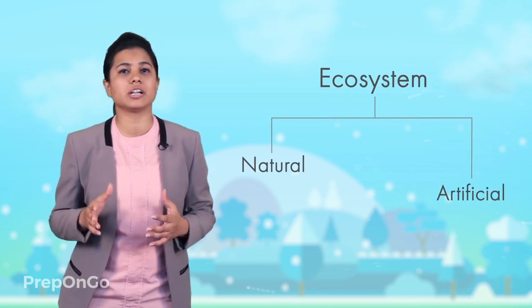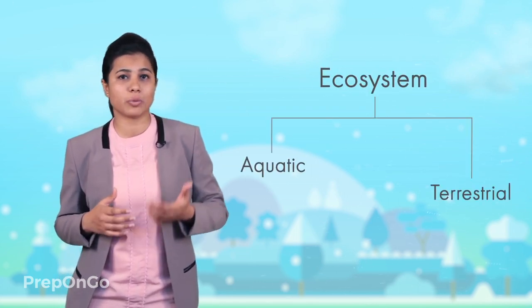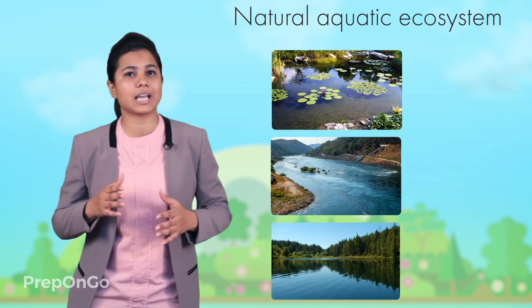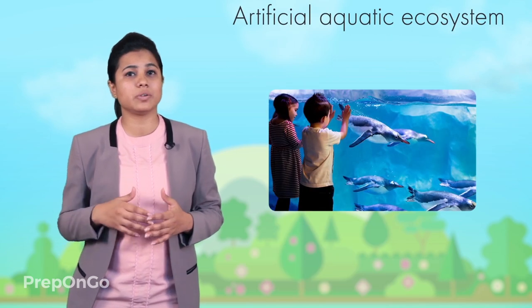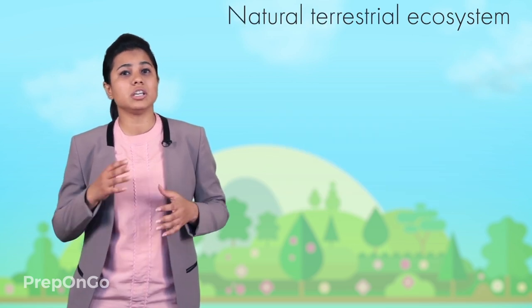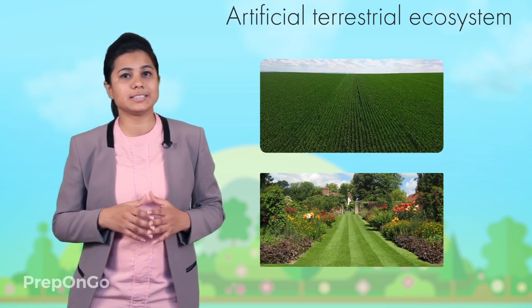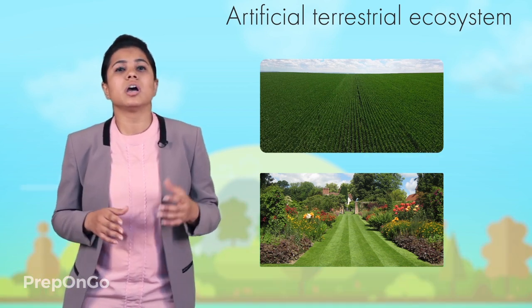Ecosystems can be natural or artificial depending on whether they are man-made or not. They can also be categorized as aquatic and terrestrial depending on the environment in which they exist. Examples of natural aquatic ecosystems include ponds, rivers, and lakes. An example of an artificial aquatic ecosystem is an aquarium. Natural terrestrial ecosystems include forests and mountains. Gardens and crop fields are examples of artificial terrestrial ecosystems. Proper functioning of ecosystems is necessary to maintain balance in nature. Therefore, any activity disrupting an ecosystem must be avoided, as it will create an imbalance in nature which will in turn lead to its destruction.